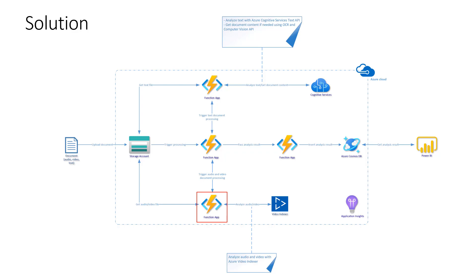Once we have results from Azure Cognitive Services — if this is a PDF file — or once we have insights collected from the Video Indexer, we can call the third Azure Function that is responsible for storing those insights in Azure Cosmos DB. Once we collect the data, we combine it and store it in Azure Cosmos DB. At the end, using Power BI Desktop, we can connect to Azure Cosmos DB, get this data, and create beautiful charts to display insights about those different kinds of conversations with our customers.